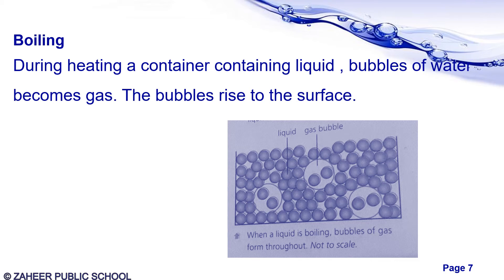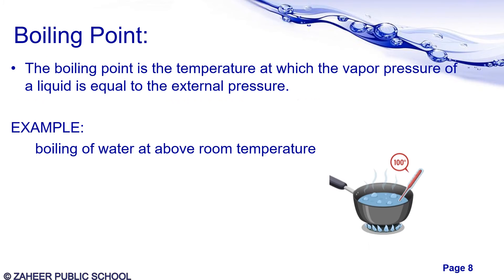The conversion of liquid to gas may also be observed in boiling, but in boiling all the particles do not escape from the outer surface. During heating a container of liquid, bubbles appear which form gas. In this picture you can see bubbles appearing between the particles of the liquid during boiling. The boiling point is defined as the temperature at which the vapor pressure of the liquid equals the external pressure. The boiling point of water is 100 degrees centigrade.